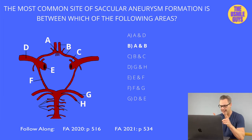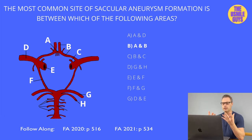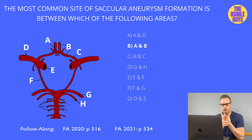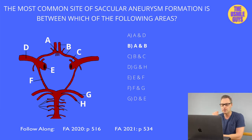SAH causes a really severe headache — oftentimes people will say it's the worst headache of their life, or a vignette may describe it as a thunderclap headache. As the bleed expands, this can lead to focal neurological deficits as well as additional symptoms depending on which vessels become compressed.